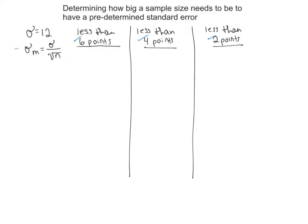The equation we're going to be relying on is: standard error equals standard deviation divided by the square root of your sample size. So we have standard error equals standard deviation divided by the square root of n.